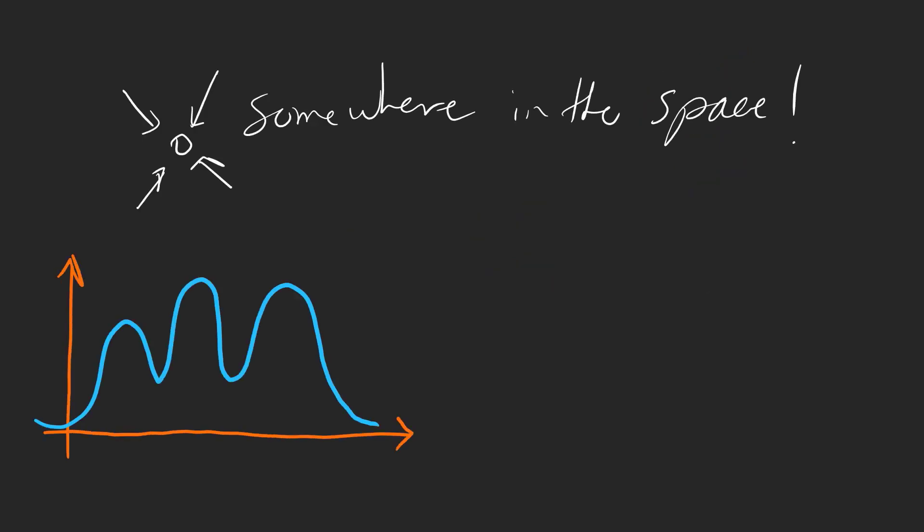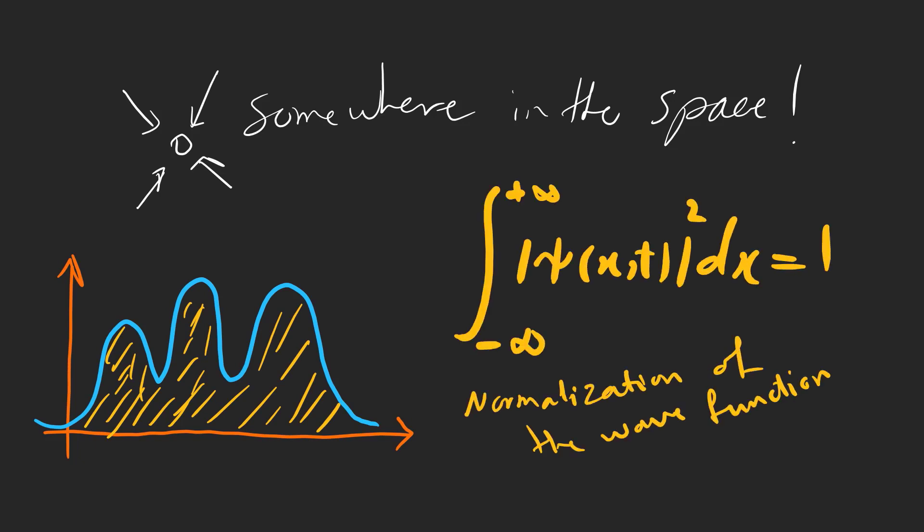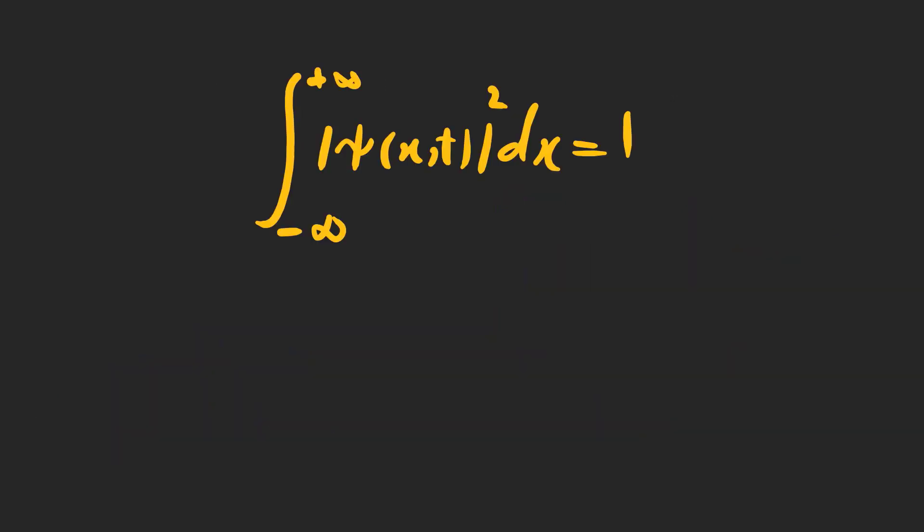There is a simple fact about a particle. It should be somewhere in this space. So, if we calculate the area under the graph, it must yield 1 because the probability of finding the particle somewhere in this space is equal to 1. This gives us the formulation for normalizing the wave function. A wave function should be normalized, so it describes a real event.